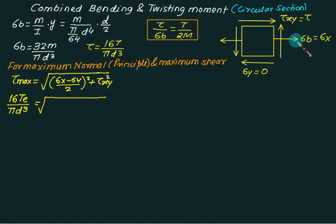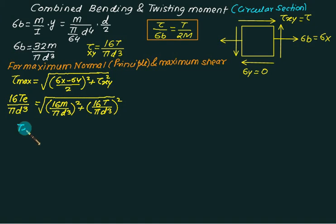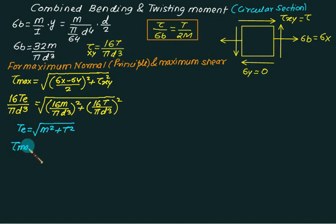Substituting: sigma_x = sigma_b = 32M/(πd³), sigma_y = 0, so (sigma_x)/2 = 16M/(πd³), and tau_xy = 16T/(πd³). After substitution, 16/(πd³) cancels out, giving the equivalent torque equation: T_e = √(M² + T²). This concept is called equivalent torque. Using this, you can simply calculate tau_max = 16T_e / (πd³) in one step.